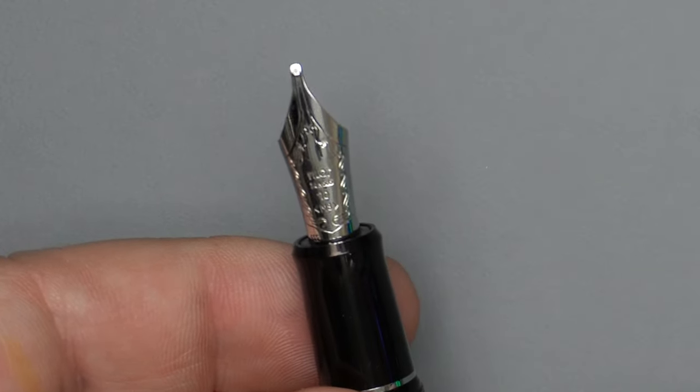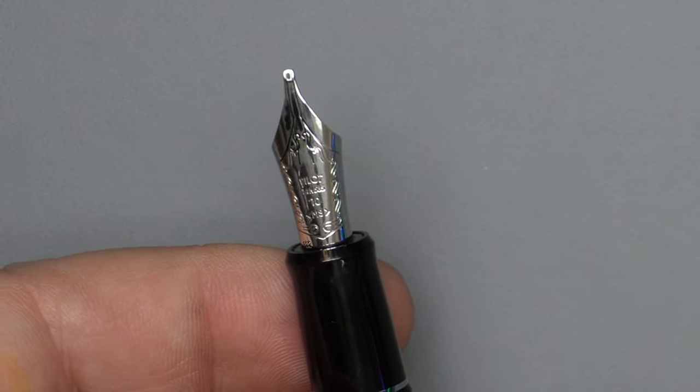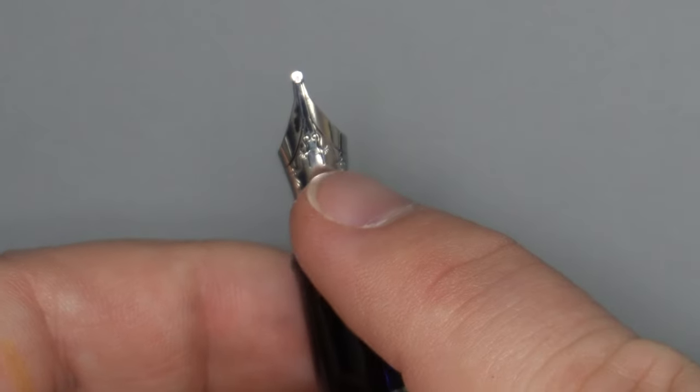Then you have the MS for music stub, and then you have, most distinctively, I think here, two nib slits on this 14 karat gold rhodium-plated nib right here and here.